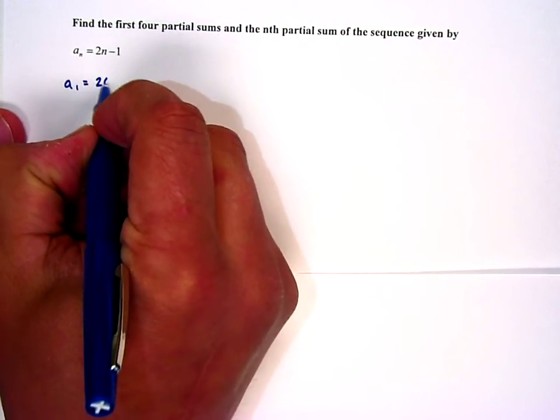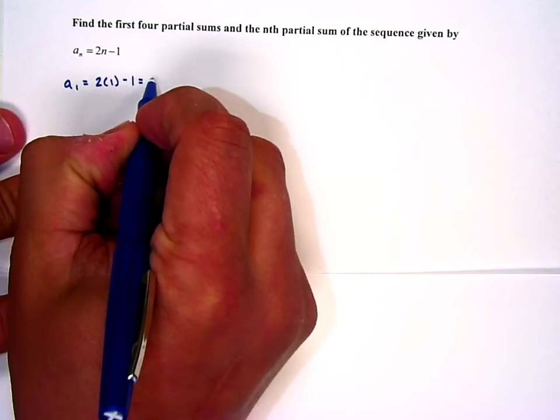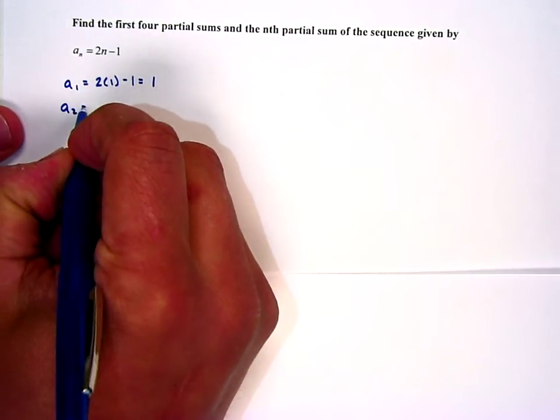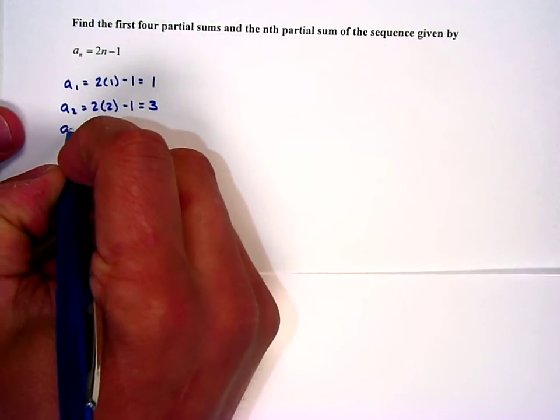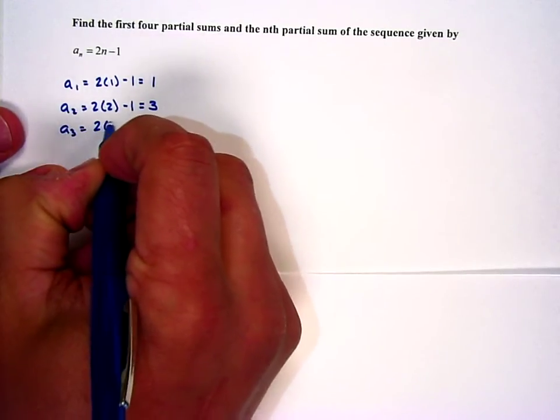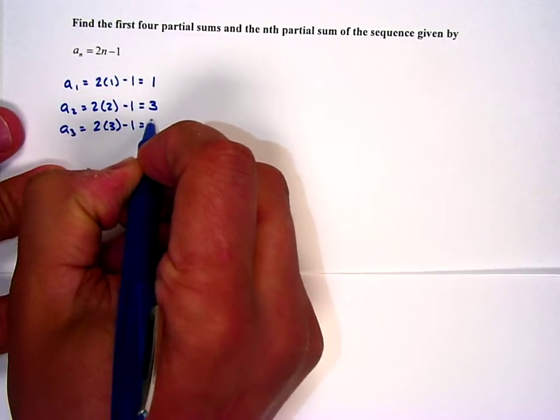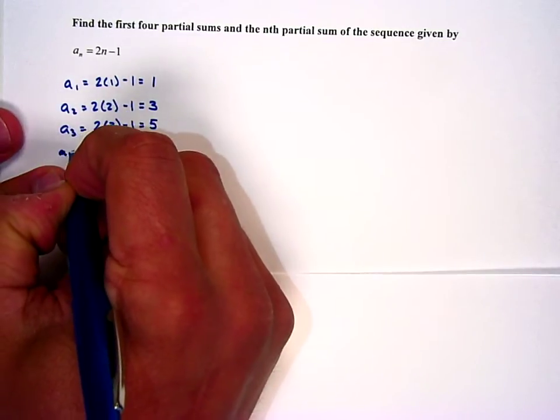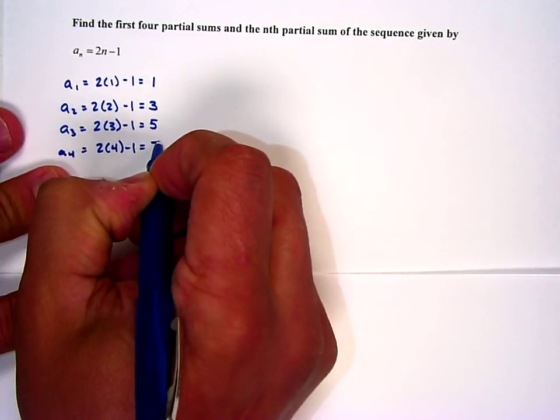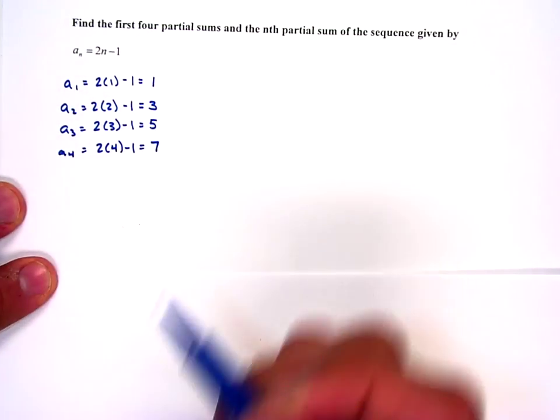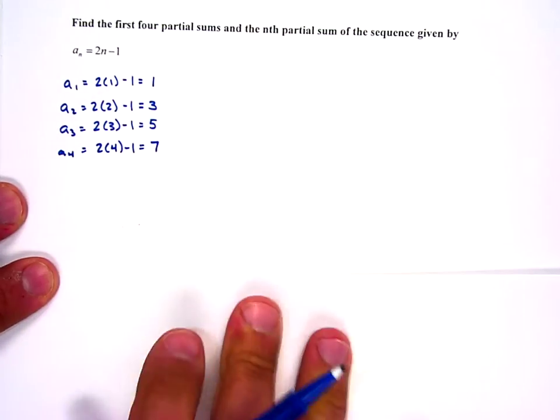So the first term is going to be 2 times 1 minus 1, that's 1. The second term is going to be 2 times 2, that's 4 minus 1, is 3. A sub 3 is 2 times 3 minus 1, that's 5. And a sub 4 is 2 times 4 minus 1, which is 7. So we can see that it goes up by 2. That's a pretty simple, straightforward sequence.